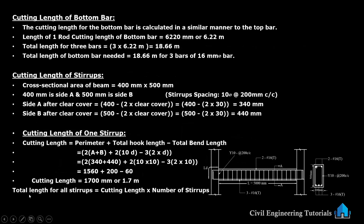Total length for all stirrups: cutting length into number of stirrups. Cutting length 1.7 meter into 26 numbers. We are getting total length of all stirrups: 44.2 meter.